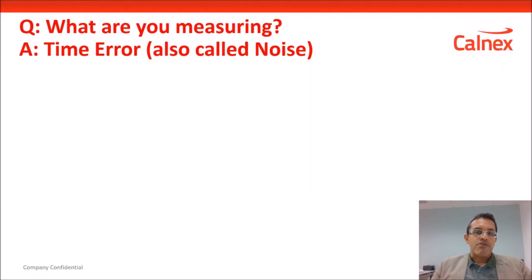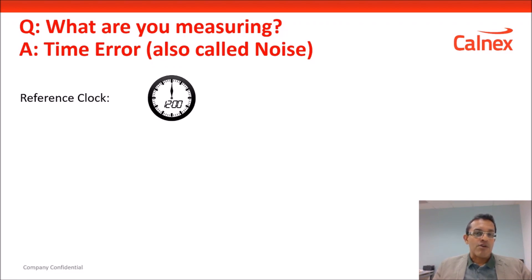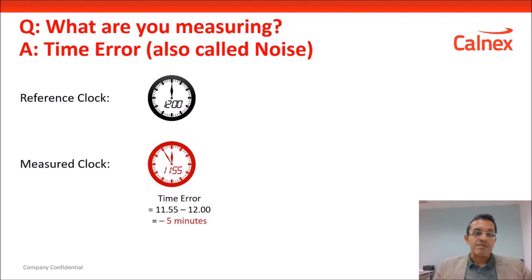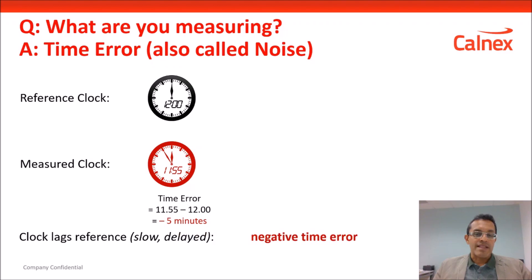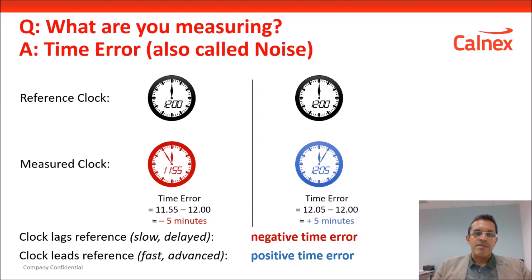What are you actually measuring when you're measuring the performance of a clock? The answer is really time error. When you're transferring time using network equipment, we're measuring the error in that transferred time — it's called time error, sometimes referred to as noise of the clock. Time error is very simply: when you have a reference or master clock, what is the error of the recovered time relative to that? For example, if a measured clock is five minutes behind, you have a time error of minus five minutes. In practice, these devices and networks measure time errors in the order of single digits or tens of nanoseconds.